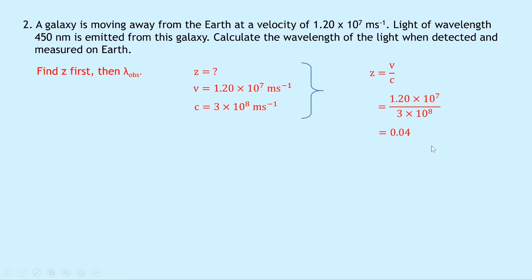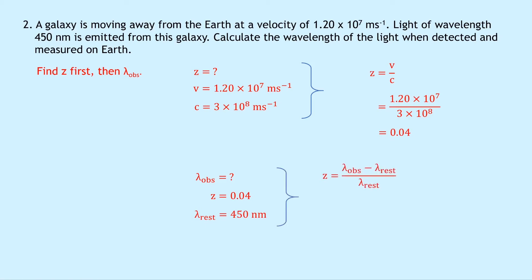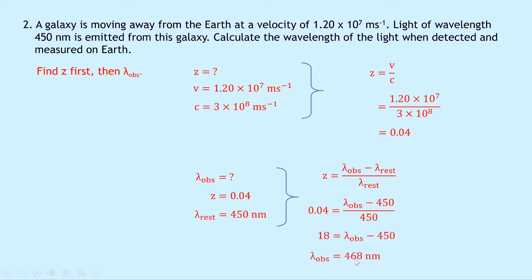We can now use z equals 0.04 to find lambda OBS. The rest wavelength lambda rest is 450 nanometers. Using z equals lambda OBS minus lambda rest over lambda rest: 0.04 equals lambda OBS minus 450 divided by 450. Cross-multiplying gives 18 equals lambda OBS minus 450. Adding 450 to both sides gives lambda OBS equals 468 nanometers. A quick check: the observed wavelength is bigger than the rest wavelength, which it should be for a galaxy moving away from the Earth.